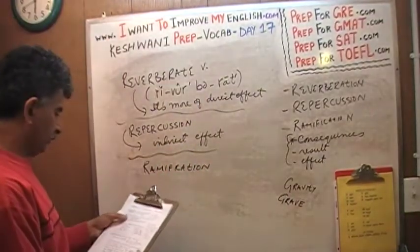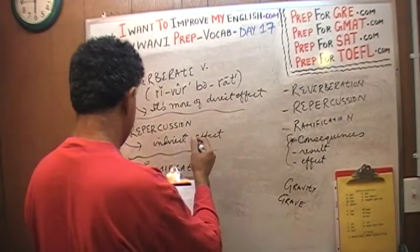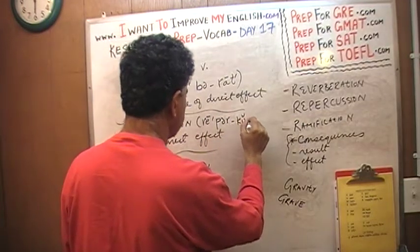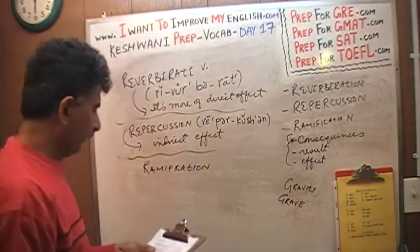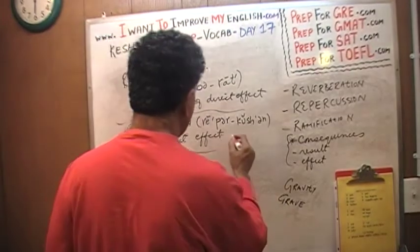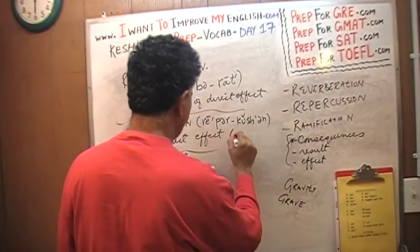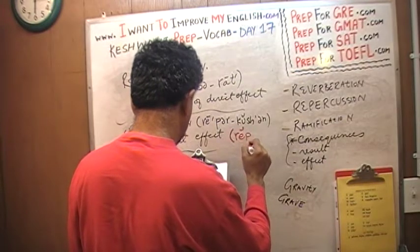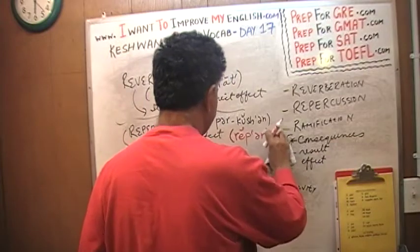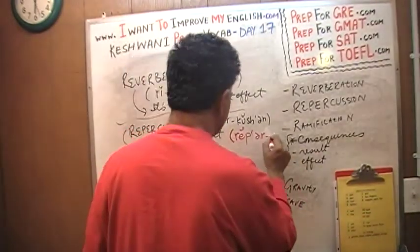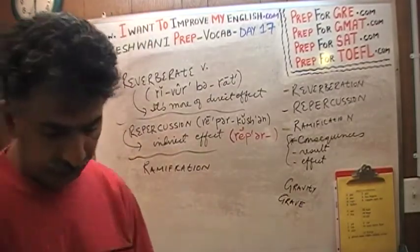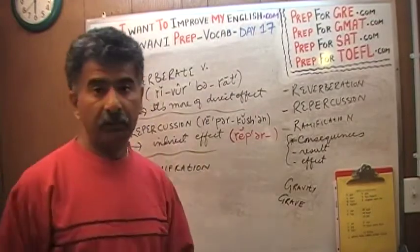We never talked about the pronunciation of repercussion. It's pronounced re-per-CUS-sion. Some people also pronounce it as re-per-CU-ssion. Both are considered acceptable pronunciations. It simply means an indirect effect of an event, as opposed to reverberation, which is more of a direct effect.